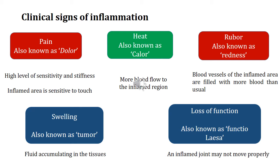We also find swelling at the inflamed site, referred to by the Latin term tumor, which is due to fluid accumulating in the tissues. The next important sign is loss of function, also called functio laesa. If you look at an inflamed joint, for example in rheumatoid arthritis, you will not be able to walk properly and the joint will not be able to move properly — there is a loss of function.